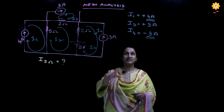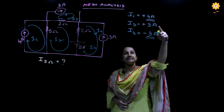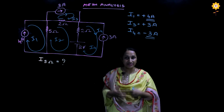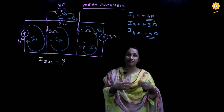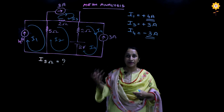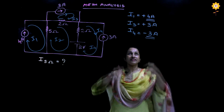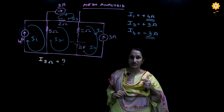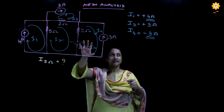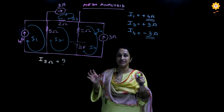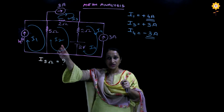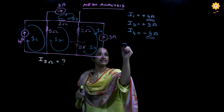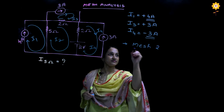We have directly obtained the values of mesh currents i1, i3, and i4. Compared to earlier problems where you had to write KVL equations for all meshes, the presence of current sources in the outermost paths gives us these values directly. Out of four mesh currents, three are already known, so the only unknown remaining is i2. We will write the KVL equation for mesh 2 only.